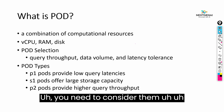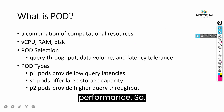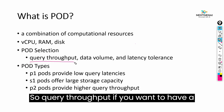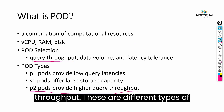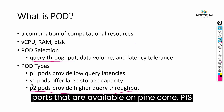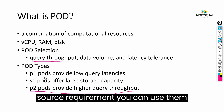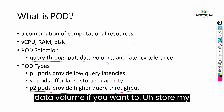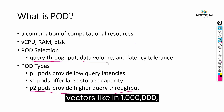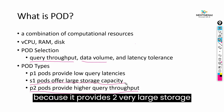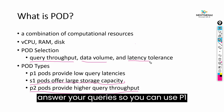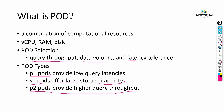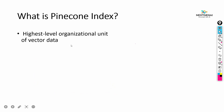Pod selection is very important for your application and you need to consider your requirements carefully to get good performance. For query throughput — if you want higher throughput — you can use p2 pods because they provide really high throughput. These are the different types of pods available on Pinecone: p1, s1, and p2. For data volume, if you want to store a very high number of vectors — like millions — you can use s1 pods because they provide very large storage capacity. If your requirement is lower latency, you can use p1 pods.